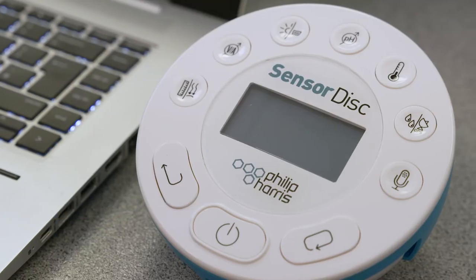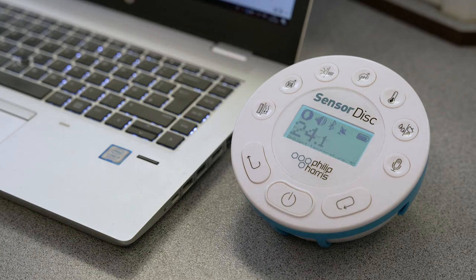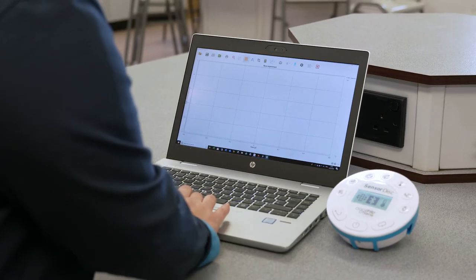The first step is to set up the sensor disk. Turn the sensor disk on allowing a few seconds for it to power up. Open the sensor disk software on the device you're using to collect the data.